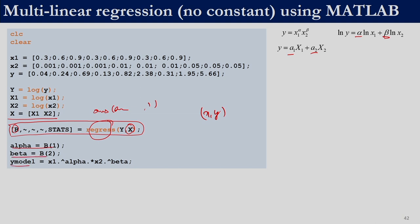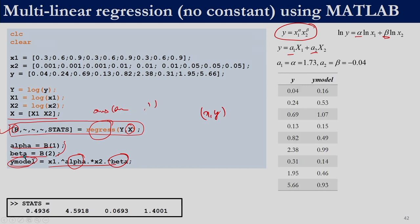We can compute y_model = x1.^alpha .* x2.^beta and compare with the given y values. The differences are significant here. Typing stats shows R² = 0.4936, which is not a very good fit. That covers multilinear regression; now let us move to polynomial regression.